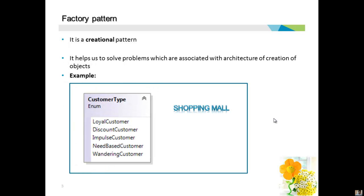When you look at the term factory pattern, the term itself implies that it is going to create or produce something for us. This pattern is going to create or produce objects — it helps us solve problems associated with software architecture with respect to the creation of objects. In order to understand factory pattern and why it is called a creational pattern, it's better if we take an example.